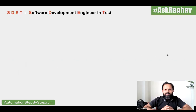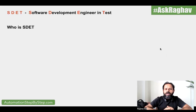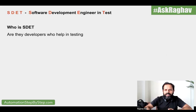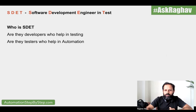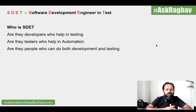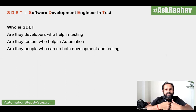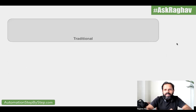SDET stands for Software Development Engineer in Test. With this, we have to think: who exactly is an SDET? Are these developers who help in testing? Are these testers who help in automation and the development process? Or are these people in the team who can do both development and testing and also help with the deployment process? Here we have to understand how this role was born and what was the need for this kind of a role.